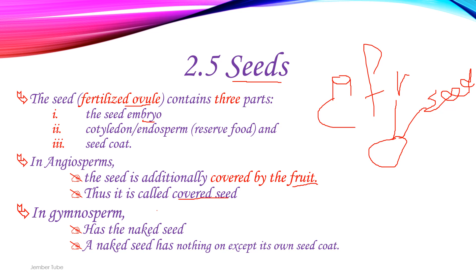Whereas in gymnosperms, they have naked seeds — that means the seeds do not have a fruit-like part. These are the characteristics of gymnosperm seeds; the naked seed has no covering fruit.